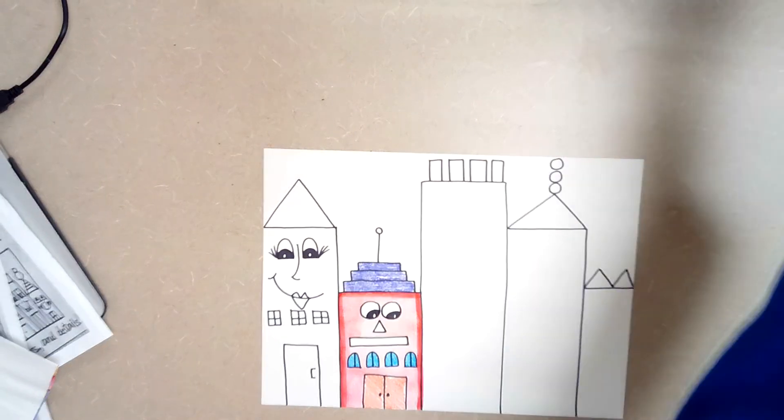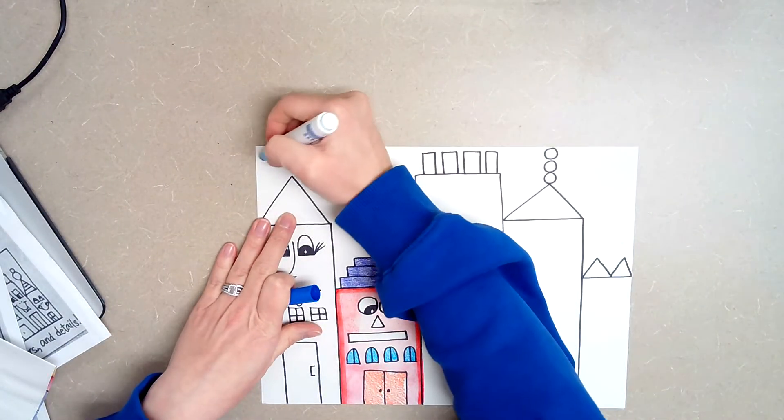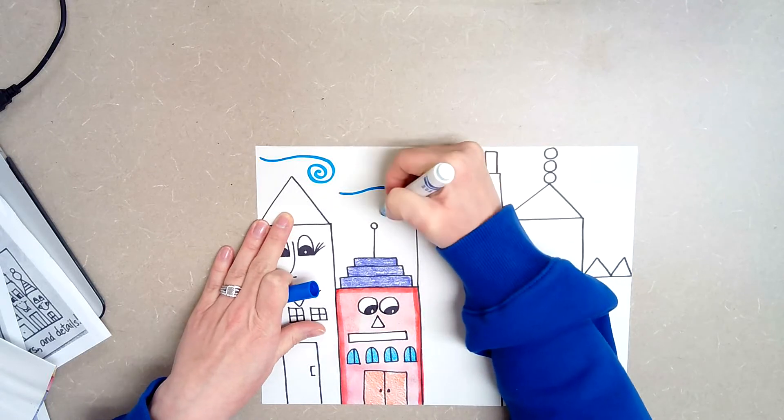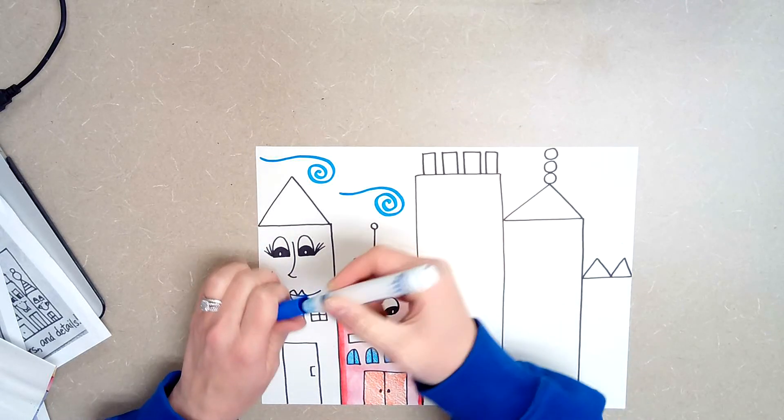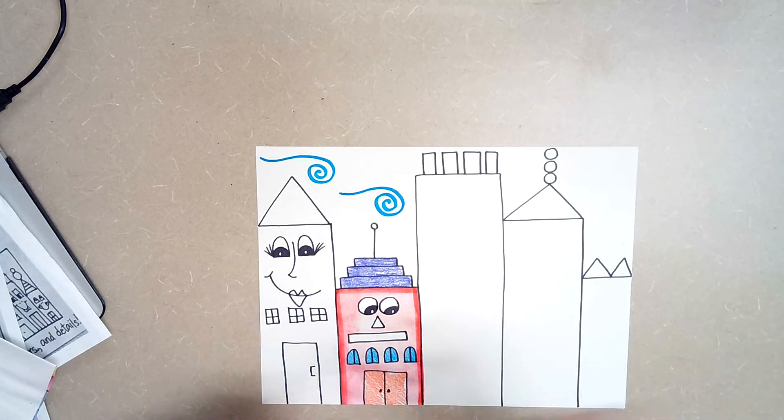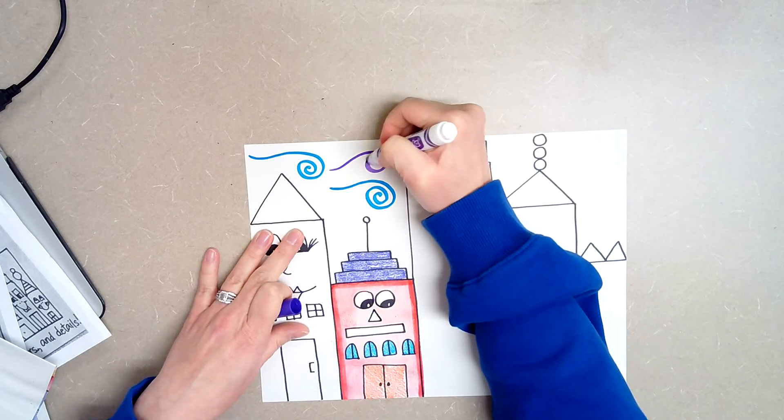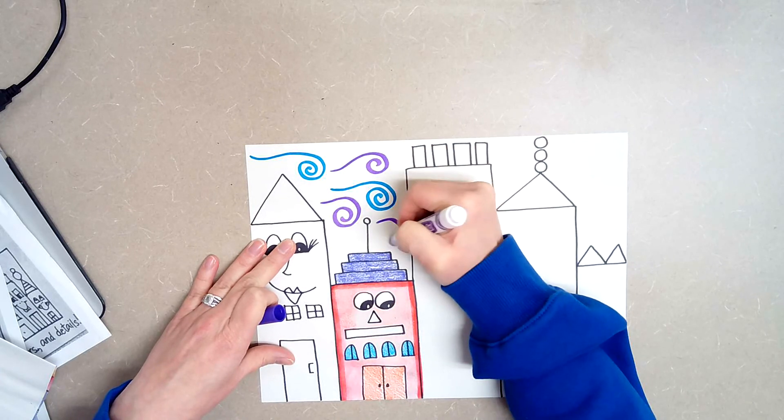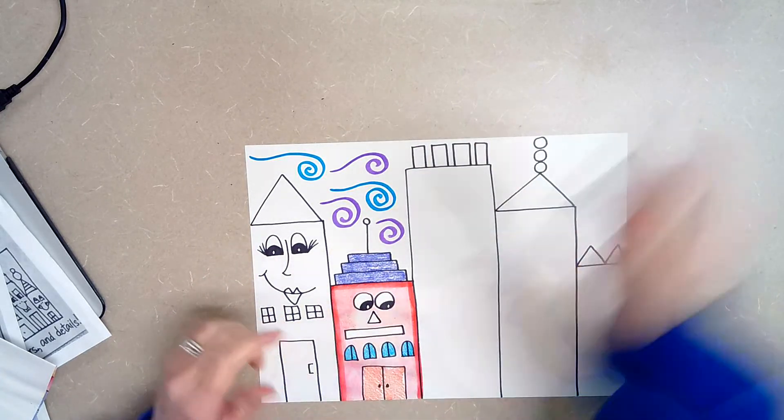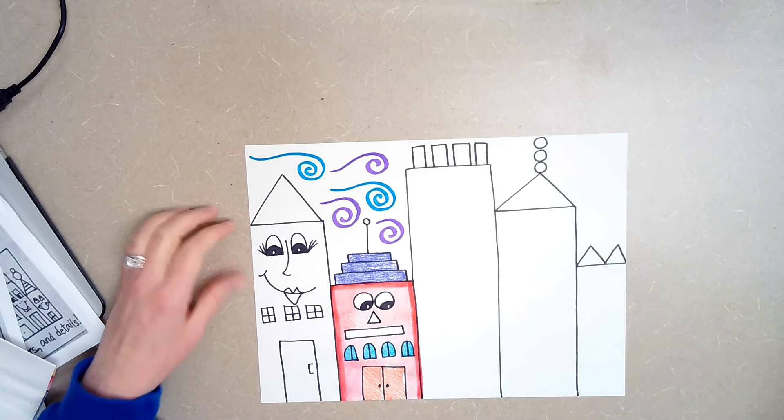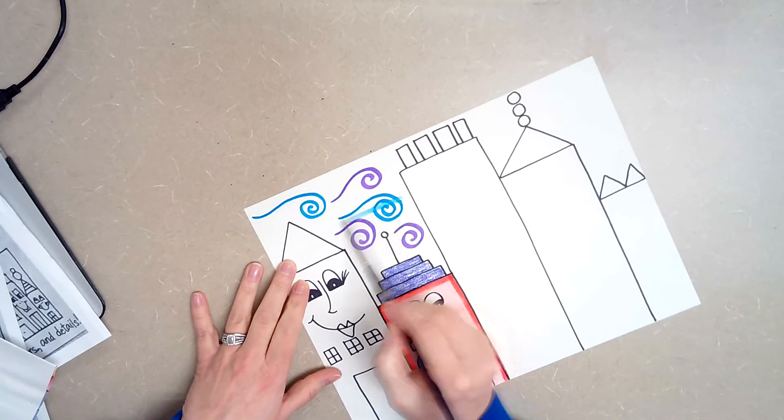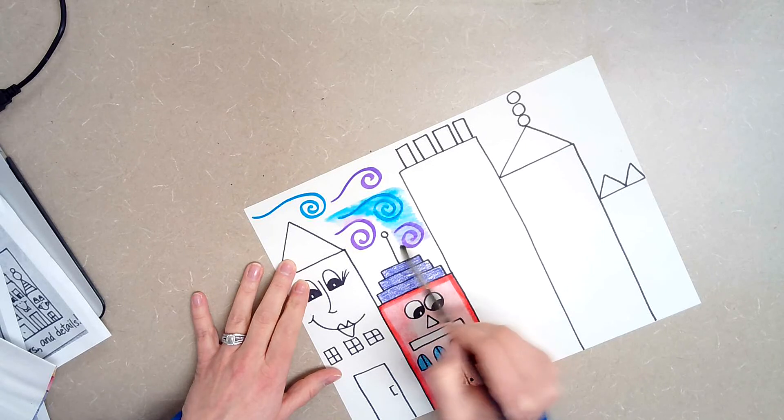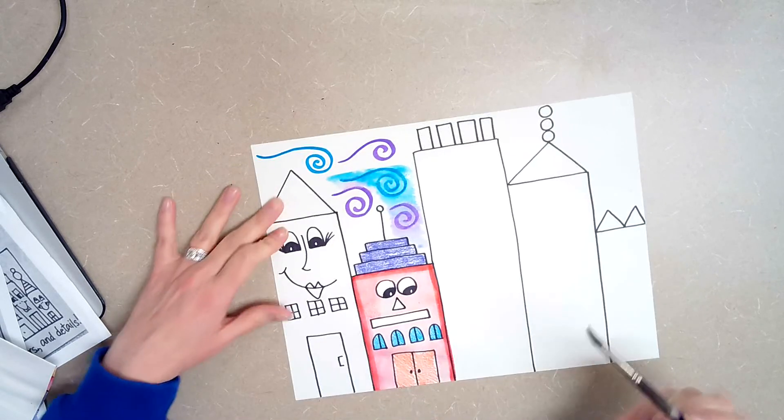Or you could do like a spiral. You can fill up your background that way. And you could leave it like that or maybe you want to do the marker trick with the spirals. So you could go in and you could just paint over top of your spirals. You could fill in your background that way. That's your choice too.